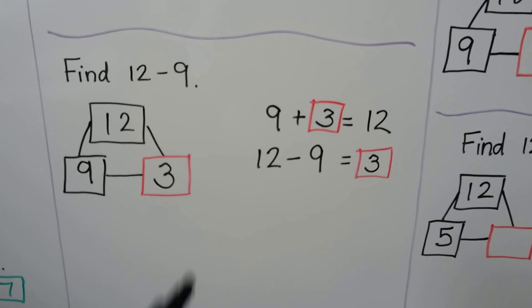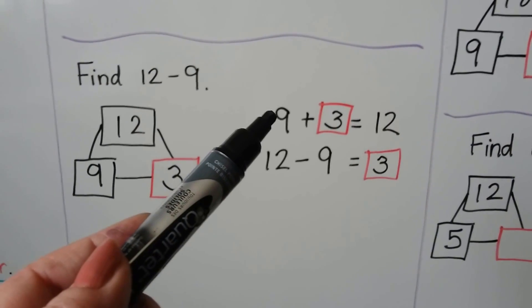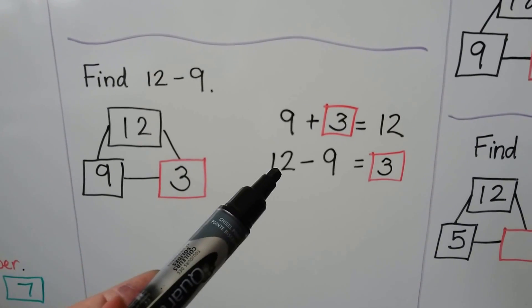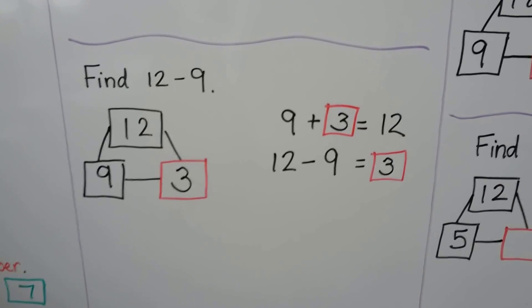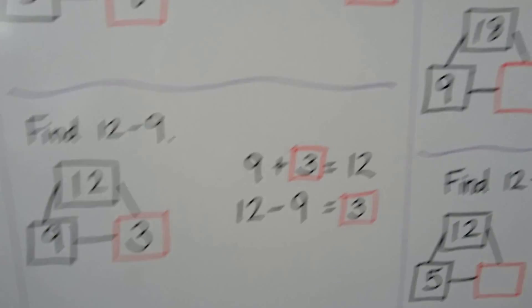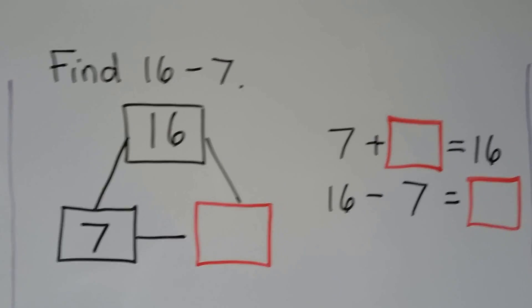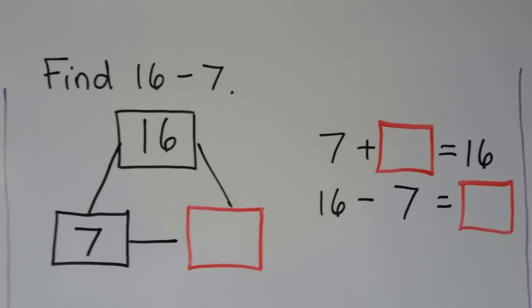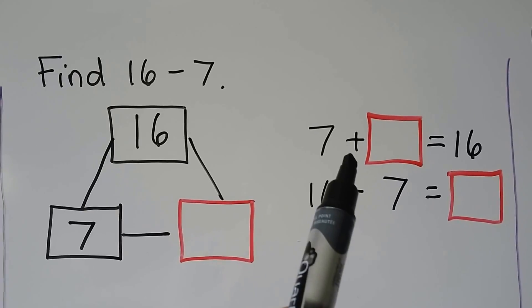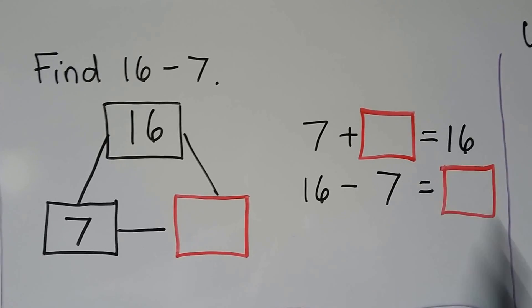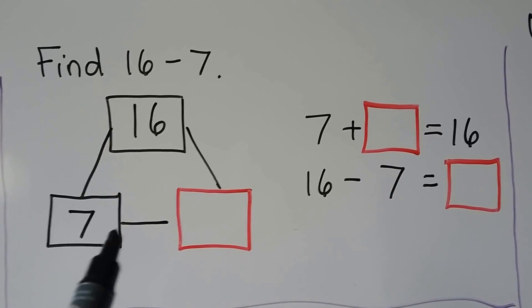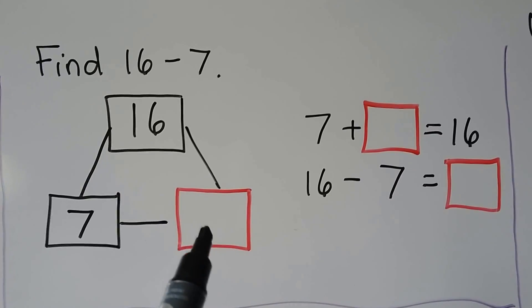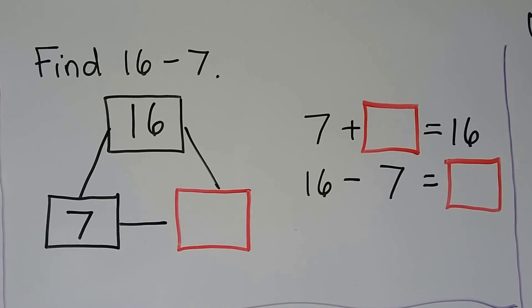We used an addition sentence to help us find a related subtraction sentence. We can find 16 minus 7. We can use 7 plus some unknown number equals 16.